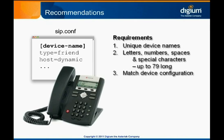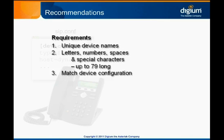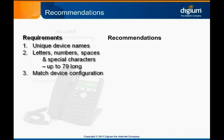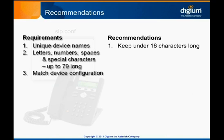The previous slide covered only the requirements for Asterisk device naming. We'll talk now about some of the things we recommend doing or avoiding to keep your system secure and easy to maintain. Though Asterisk can support device names up to 79 characters long, the device might only support 16 or 32 characters. We recommend keeping device names under 16 characters long for this reason. Some devices may not permit special characters even though Asterisk does, so we also recommend against using them in your device names.